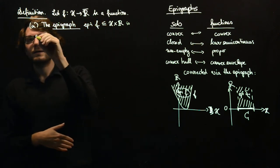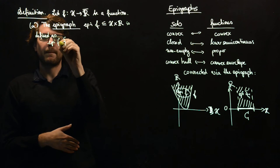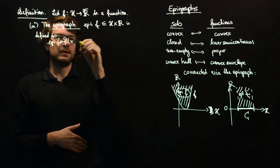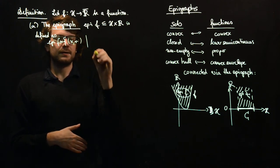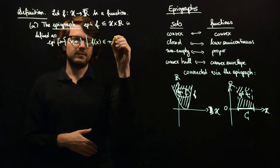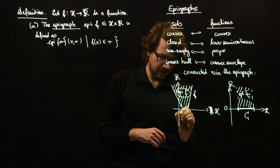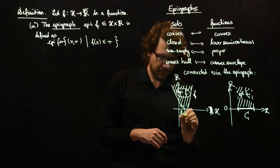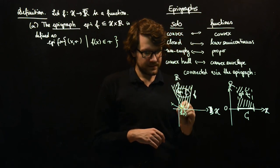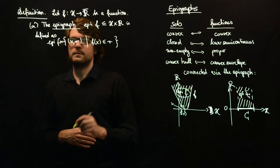Epi f is defined as, since we are in H times R, this is a set of pairs. And we choose the pairs such that f of x is less or equal than r. So as you see, here you have f of x. The point here is x. And then everything such that f of x is less or equal than r is element of the epigraph.